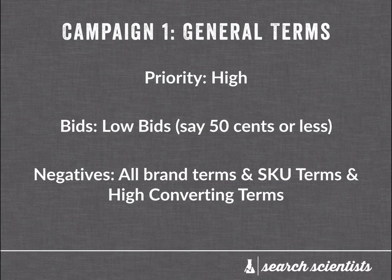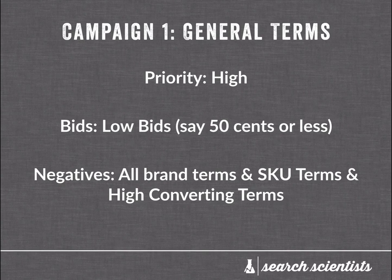In your first campaign is where you will appear for your general terms. You keep your priority high — and you may be thinking, why on earth would I put my general terms on priority high? Don't worry, you'll see in a few minutes. So you have your priority high, you have your bids low — say 50 cents or less. And in your negatives here, all of your brand terms, your SKU terms, and any other high-converting terms get thrown in here and added as negatives. So campaign one: priority high, bids low, negatives — all the brand terms, all the SKU terms, anything high-converting.